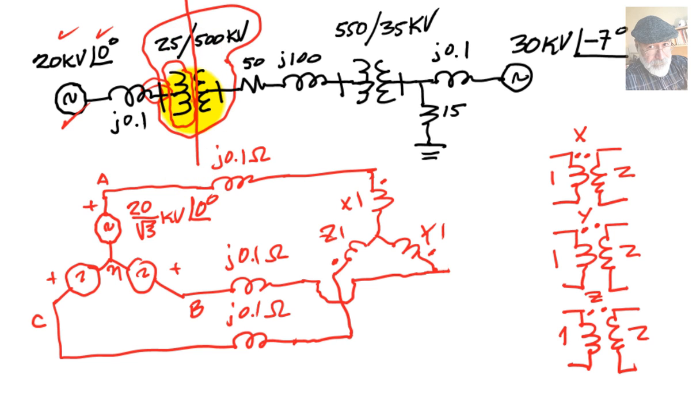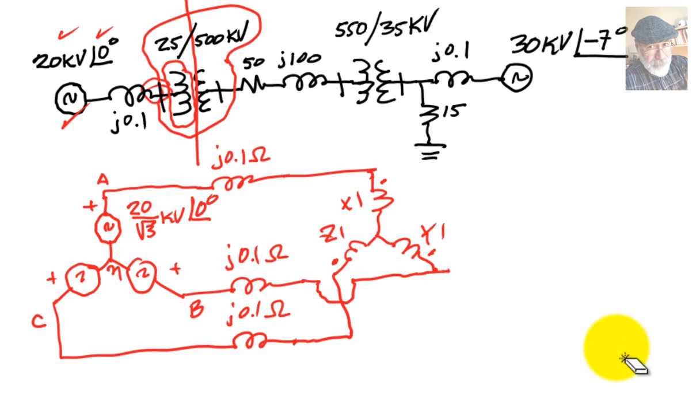What about the secondaries? Well, we take the three secondaries, X2, Y2, and Z2, and connect them also in a Y. Let me erase this from here because it's cluttering the diagram. And draw the secondaries here. Secondary of transformer X, this is, and then the secondary of transformer Y, and the secondary of transformer Z.